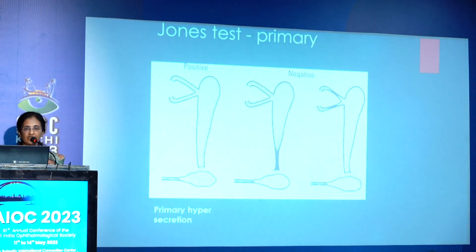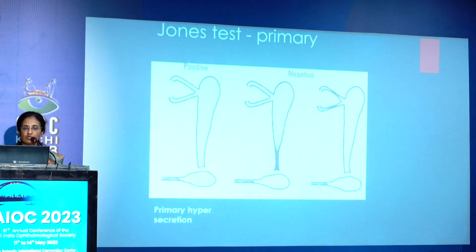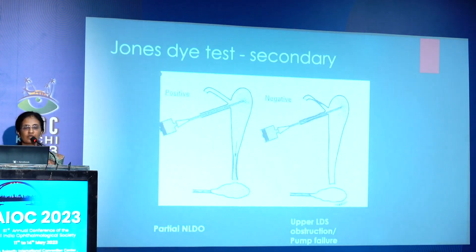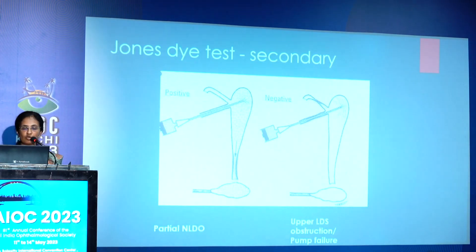If syringing is free but the patient still has watering, Jones test is helpful. Instill fluorescent dye into the conjunctiva and with a moistened cotton tip check whether you can retrieve staining. If positive, watering is due to hypersecretion. If negative, two occasions cause this: partial obstruction of the nasolacrimal duct or canalicular block. Then do syringing — if dye has reached the sac it will stain the bud, indicating partial NLD obstruction. If the dye has not reached the sac and there is no staining, it is either upper canalicular obstruction or lacrimal pump failure.